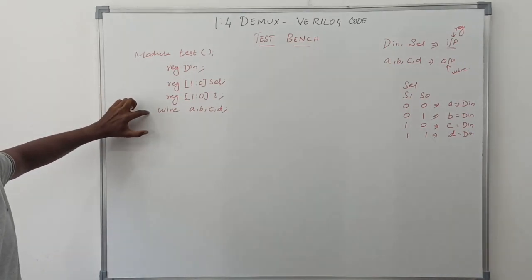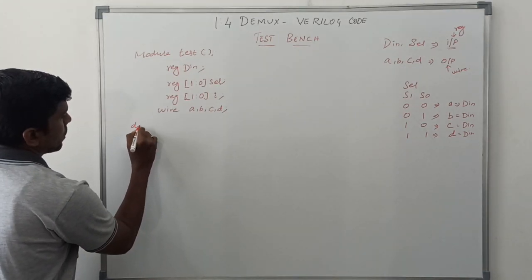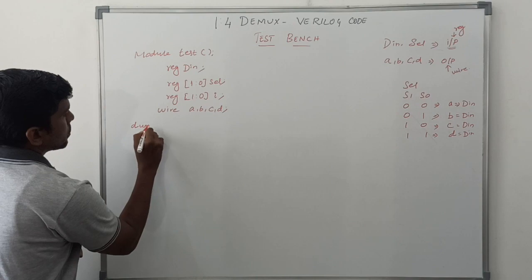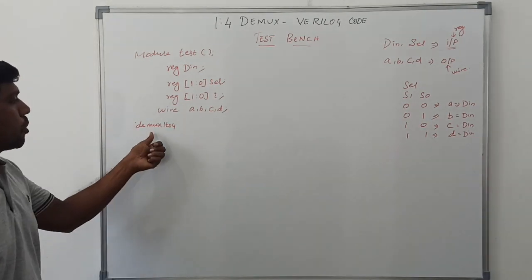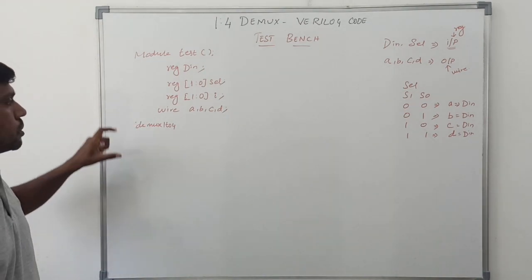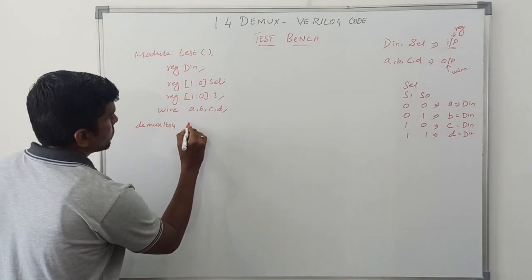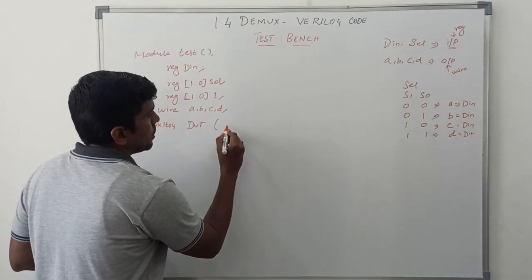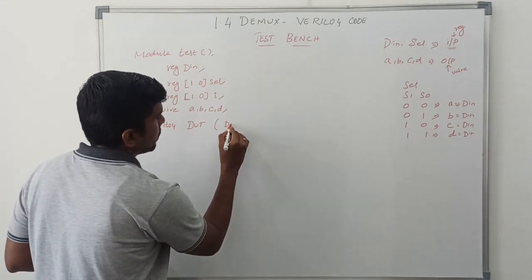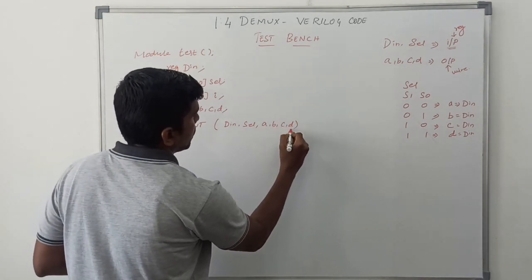Initialize the input and output variables. After that, write the module name as used in the Verilog HDL code: dmux_1to4. This module name must match the one used in the design. Then instantiate: dmux_1to4 dut — device under test — with the variables D_in, selection, A, B, C, D.